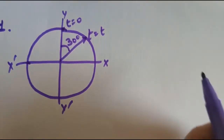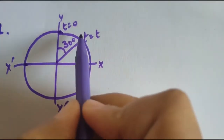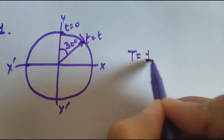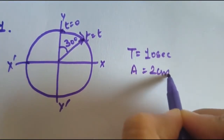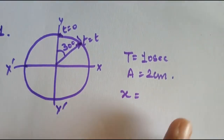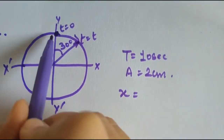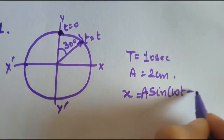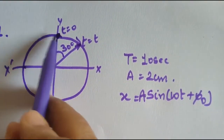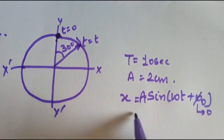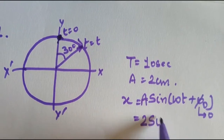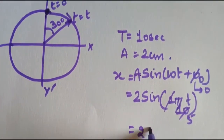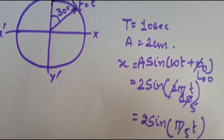Let's start the numericals. In the first question, a particle is moving in the clockwise direction. Time period is 10 seconds and amplitude is 2 cm; find x. Trick number one: always assume the particle is starting from the y-axis, so φ₀ = 0. Therefore x = a sin(ωt) = 2 sin(2π/10 · t) = 2 sin(π/5 · t). That's the final answer.